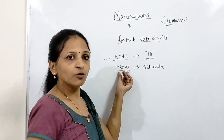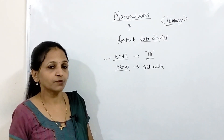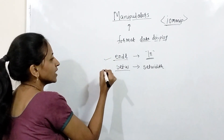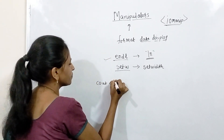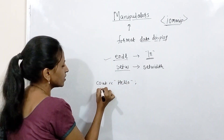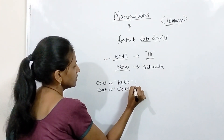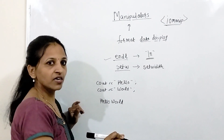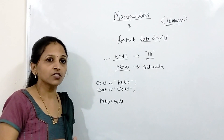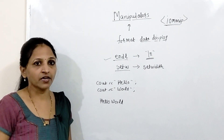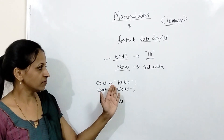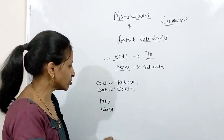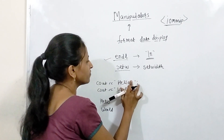The setw manipulator is used to set the field width when displaying any value or string. Now, how to use these two manipulators: for endl, it works just like a newline character. If you write cout << "hello" and then on a new line cout << 1, the output will be on one line only. If you want to display something on a new line, you must put a newline. Because of the newline, the cursor shifts to the new line, and instead of that newline character you can use endl.